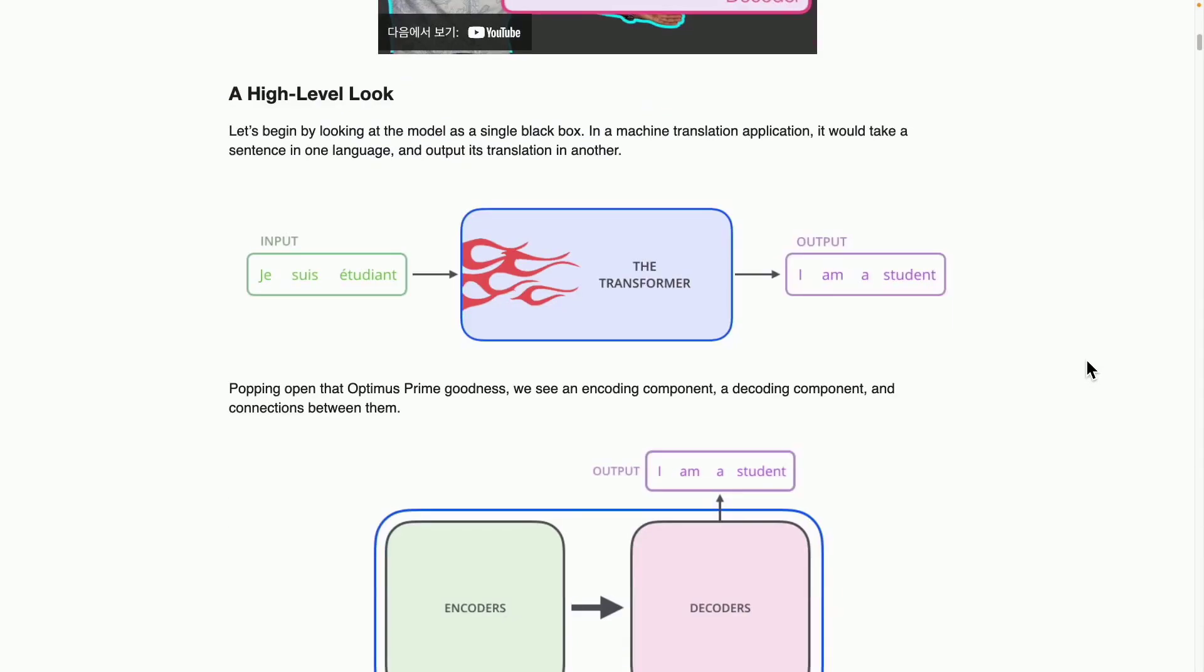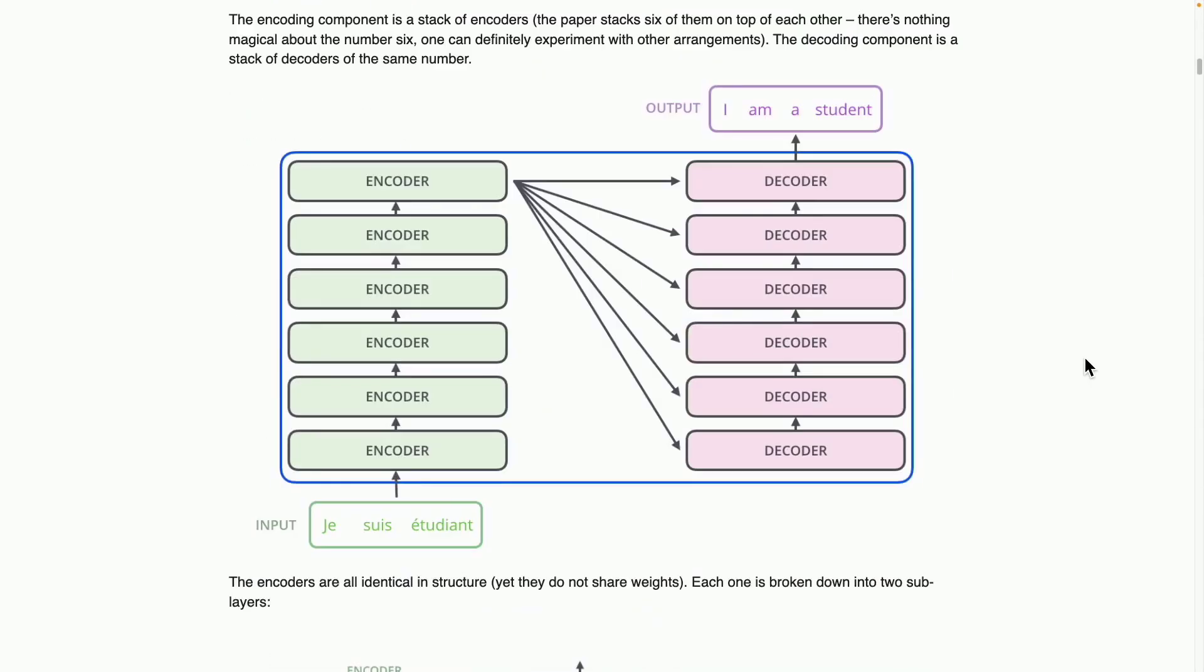Therefore, let's take a moment to thoroughly examine the transformer architecture, as detailed by Jay Alomar, so we can better understand our current state of affairs. By gaining a deeper insight into both the current transformer structure and the chain of thought method, we can more clearly grasp why HBM is so critical, and why GPUs that come equipped with HBM are in such high demand.